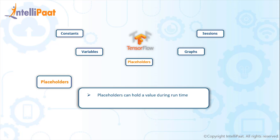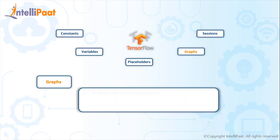A placeholder holds the value during runtime and there is no need to initialize the value while declaring it. Another difference from a variable is that a variable is defined by a particular data type and must carry the same kind of value throughout the program, whereas a placeholder can hold anything — it can be a float, an integer, or a character. There is no restriction on the data type in a placeholder, and this is how you allocate memory using these objects.